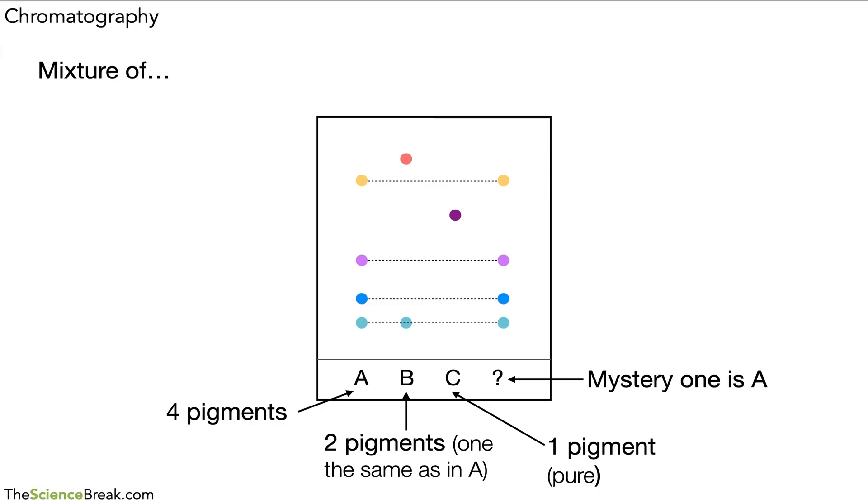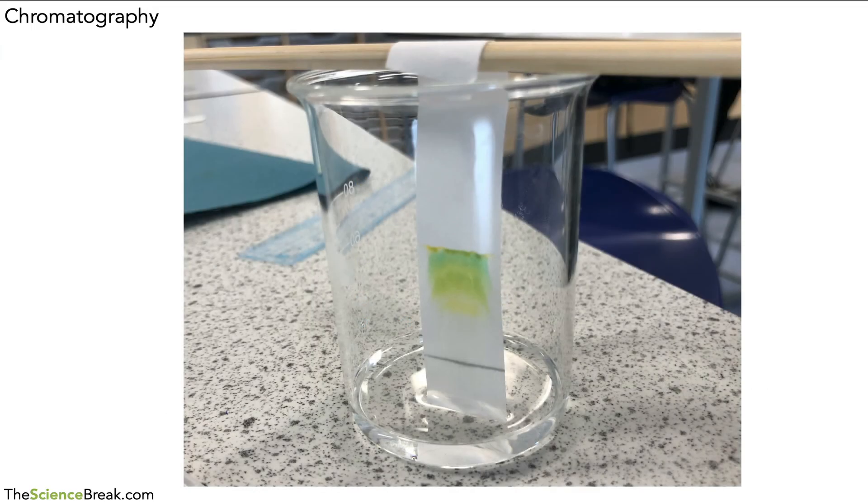Just to finish off the video for today, here is an example of a chromatogram done for real. You can see the filter paper, the chromatography paper. We've got the solvent at the bottom of the beaker, the pencil line near the bottom, and you can see the colors there that are being separated out. We haven't quite finished this one yet—the solvent has further to go before they're all separated out properly. This is actually an experiment for A-level biology, so chromatography is quite an important technique that's used throughout secondary school science.